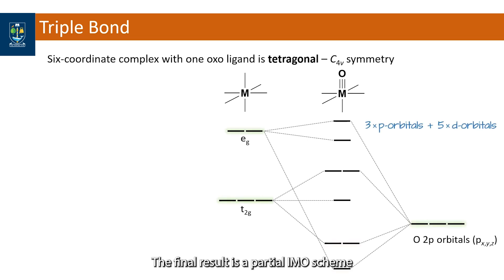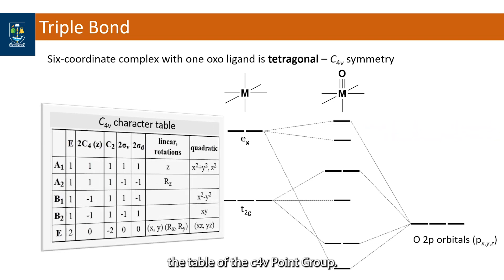The final result is a partial MO scheme comprising eight atomic orbitals combining to give eight molecular orbitals. The symmetry of each orbital is shown in the character table of the C4V point group. In the quadratic column we can find the d orbitals.